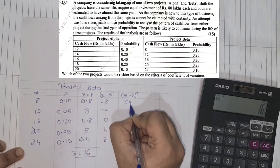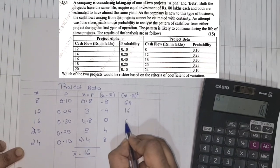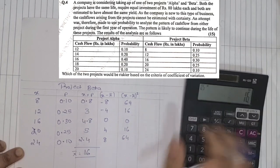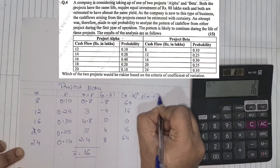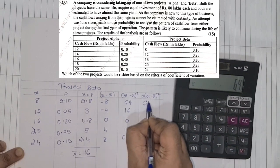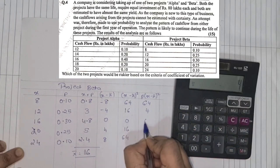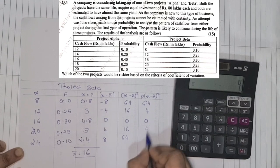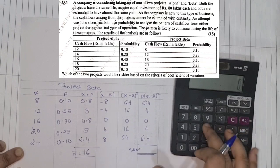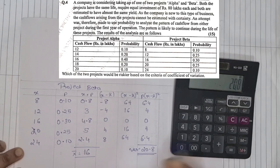Now X minus X bar the whole square. 8 times 8 is 64, 4 times 4 is 16, 0, 16, 64. Now we multiply that with the probability, so P into X minus X bar the whole square. So that will be 64 into 0.1, so that comes to 6.4, 16 into 0.25 is 4, 0 is 0, this will become 4, and 6.4. We add up, that is nothing but our variance. So we have 6.4 plus 4 plus 6.4 plus 4, which comes to 20.8.